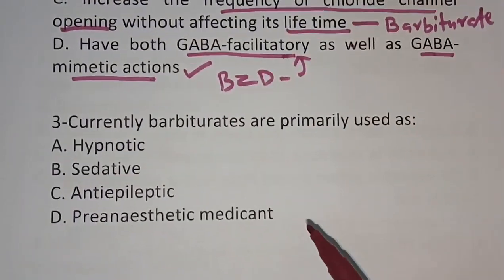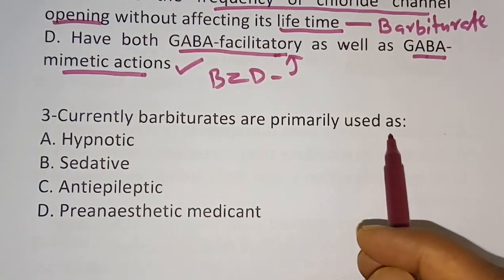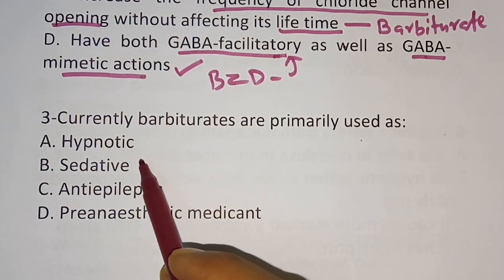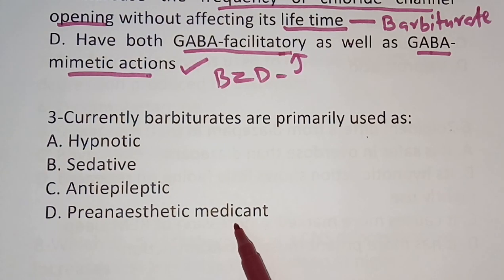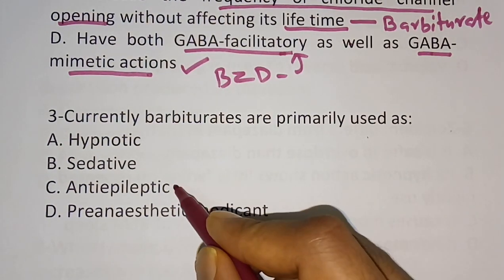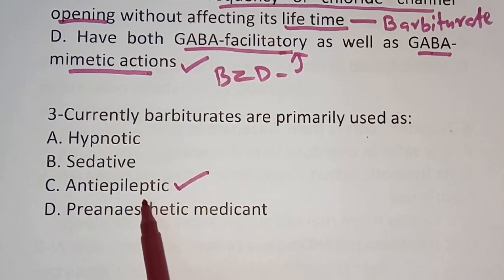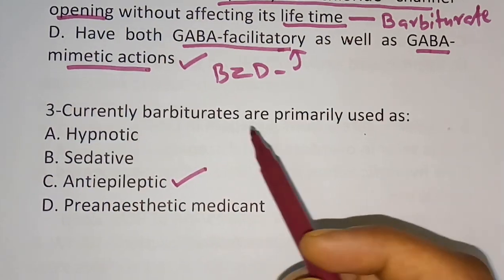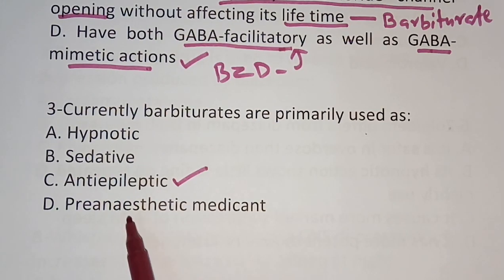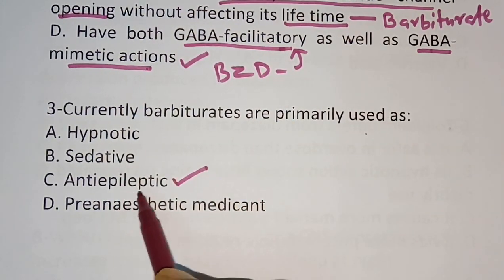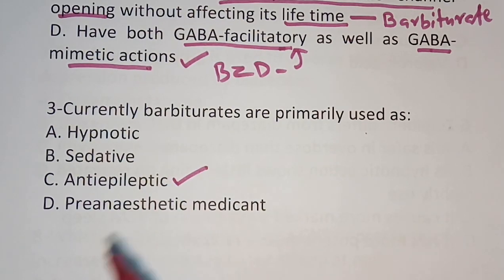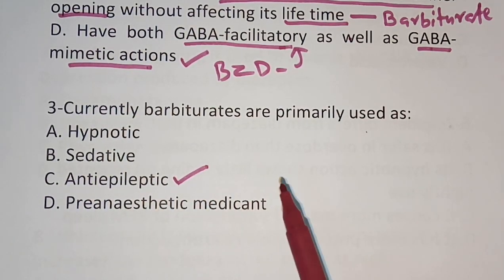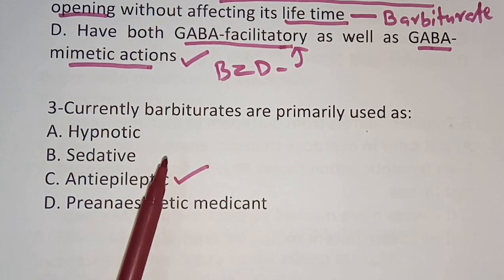We will move to question number 3. Currently, barbiturates are primarily used as. Options: A) hypnotic, B) sedative, C) anti-epileptic, D) pre-anesthetic medicament. The correct answer is anti-epileptic. Even in epilepsy this is not used that much currently, but compared to the other options — hypnotic, sedative, pre-anesthetic medicament — the correct answer here is anti-epileptic. Phenobarbitone is the example we will see in the anti-epileptic drug lecture.